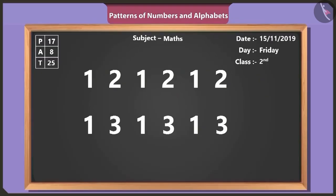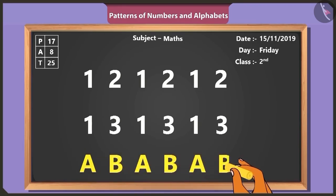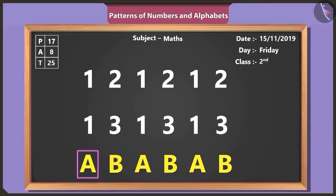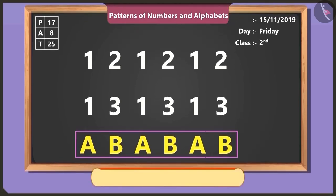Children, now look carefully at what I write on the board. Tell me what I have written. You have written the English alphabets A and B and repeated them again and again. Oh yes, this is a pattern of alphabets.